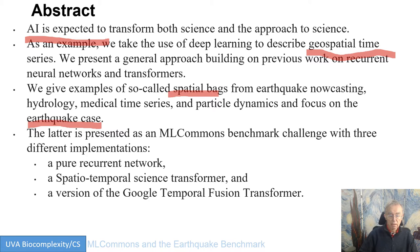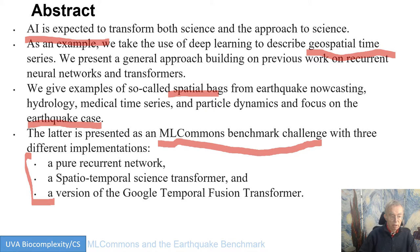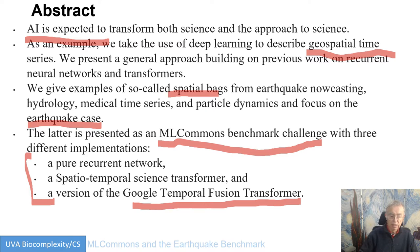As already pointed out in part A of this series, this is going to become an ML Commons benchmark challenge. It has three different implementations: a recurrent neural net, a science transformer, and a version of the Google Temporal Fusion Transformer. At the moment, they all give comparable answers, with each of them having slightly different trade-offs in what they do well and not so well.